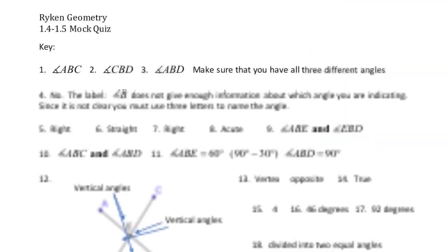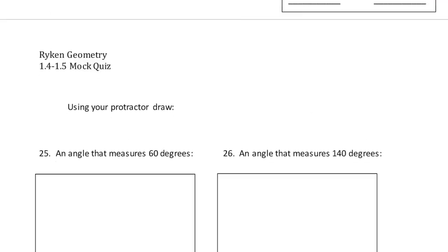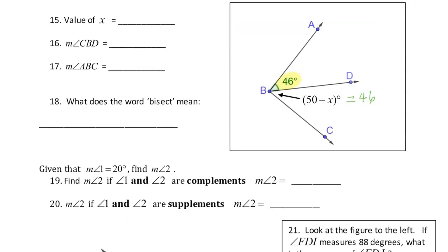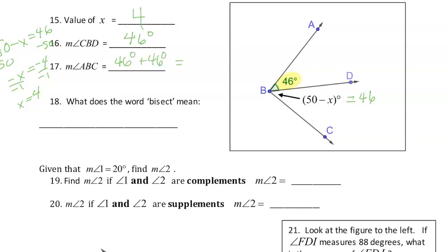Subtract 50 from each side: 50 minus X equals 46, subtract 50 from both sides, giving negative X equals negative 4, divide by negative 1, and X equals 4. Angle CBD has to be 46 degrees. So the measure of angle ABC has to be 46 plus 46, which is 92 degrees — a little bit bigger than a right angle.